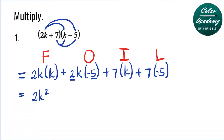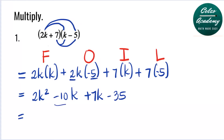Multiplying 2 and negative 5, that's negative 10, and we have the variable k. Next, 7 times k is 7k. And 7 times negative 5, we have negative 35. Simplifying further, we combine like terms: negative 10k plus 7k, which is negative 3k. So the final answer is 2k squared minus 3k minus 35.